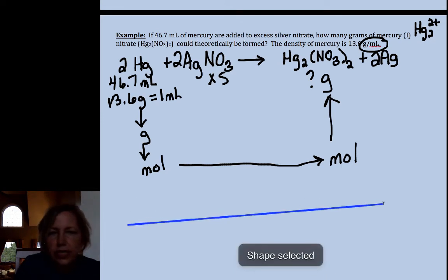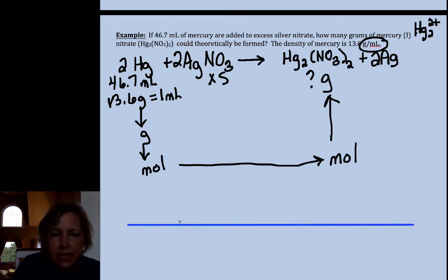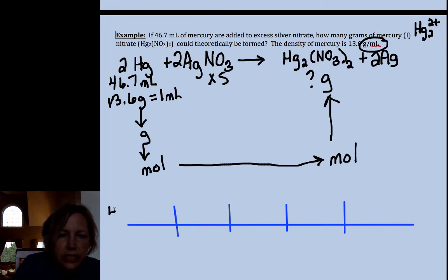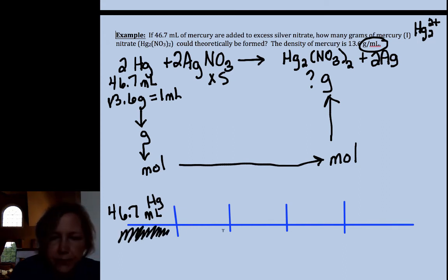And let's get our grid. I'm counting four steps. So one, two, three, four, and 46.7 milliliters of mercury. Some students like to cross off the bottom like that just so they know no number belongs there. That's fine. I want to get rid of milliliters and go to grams. My density tells me that if I measured out one milliliter, it would weigh 13.6 grams.